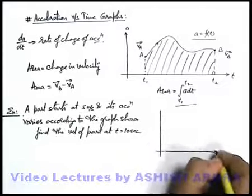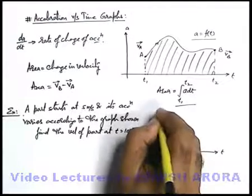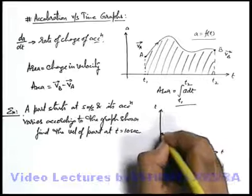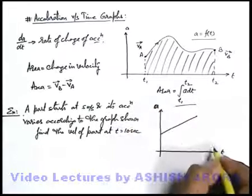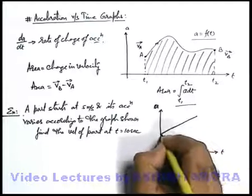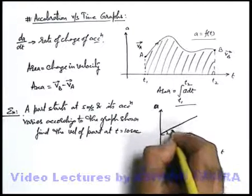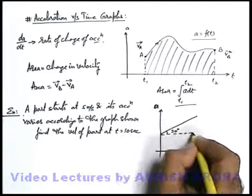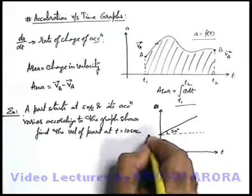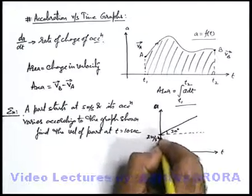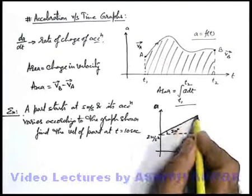The graph given to us is this. This is the acceleration time graph which is a straight line inclined at an angle 30 degree with the time axis, and this starts with an acceleration of 2 meter per second square and acceleration varies linearly with time.